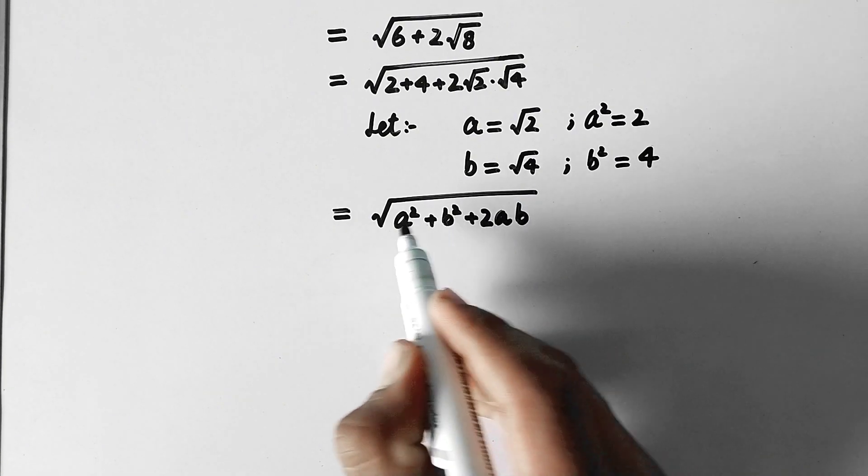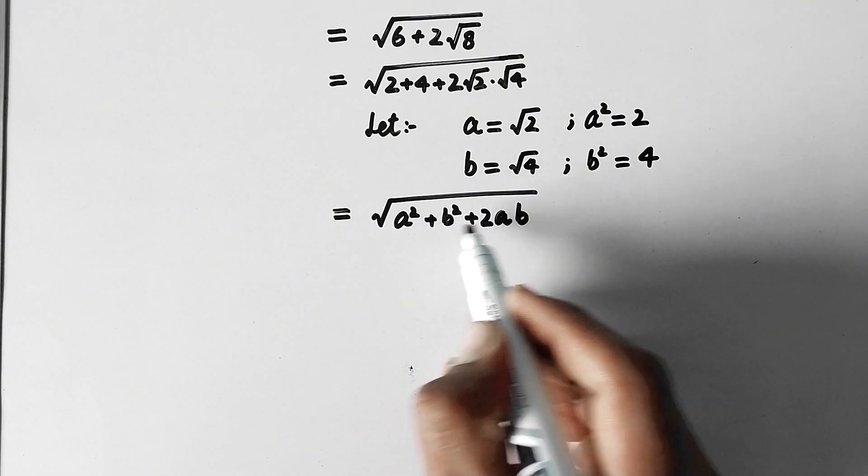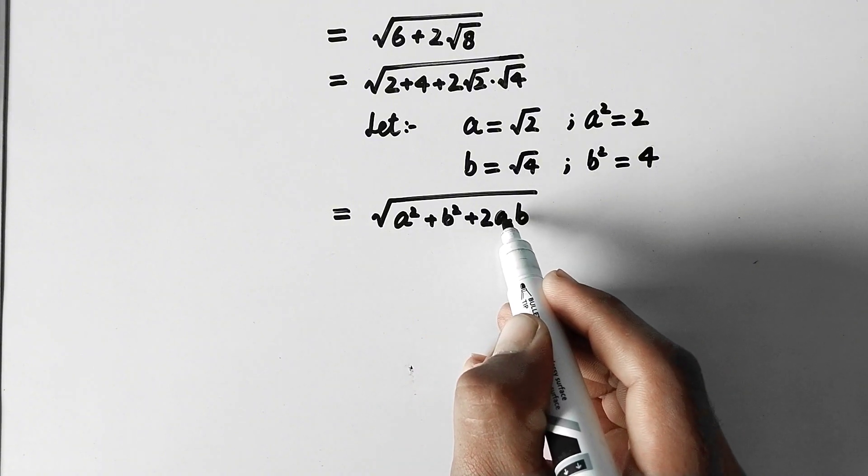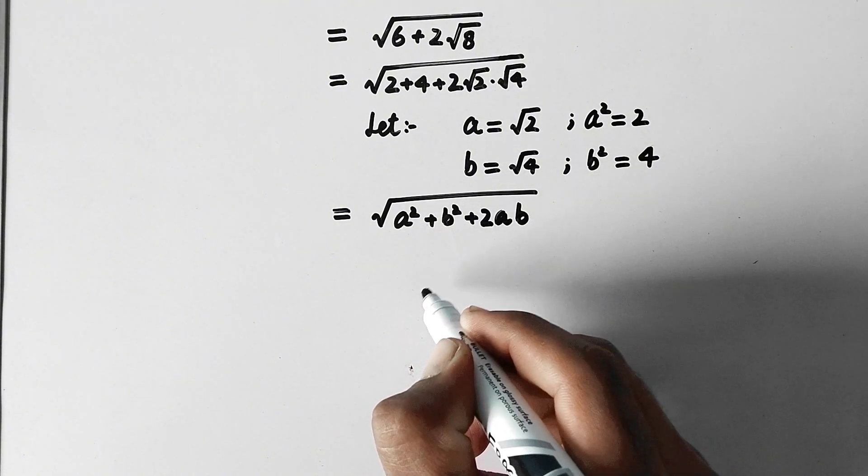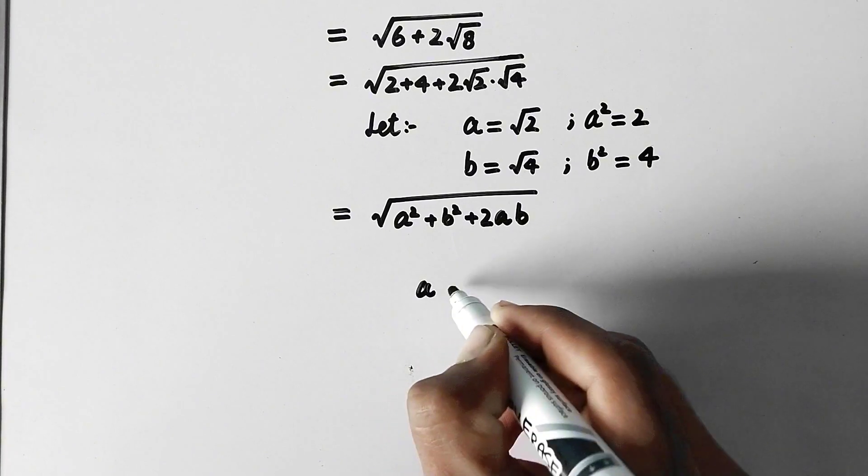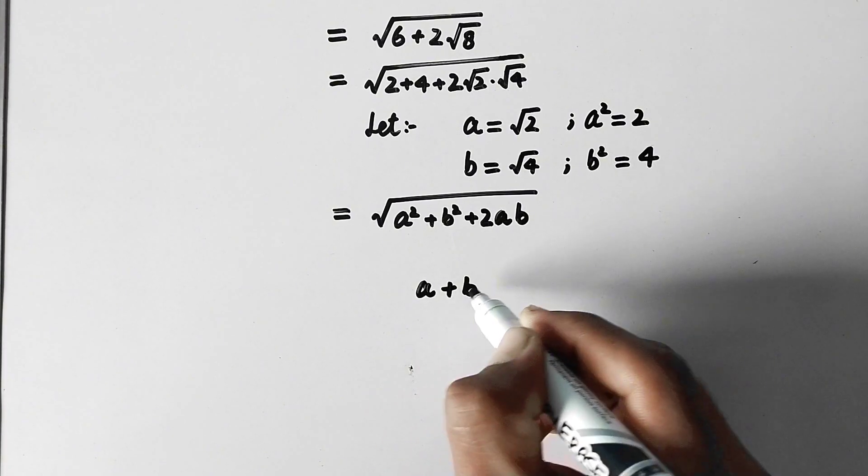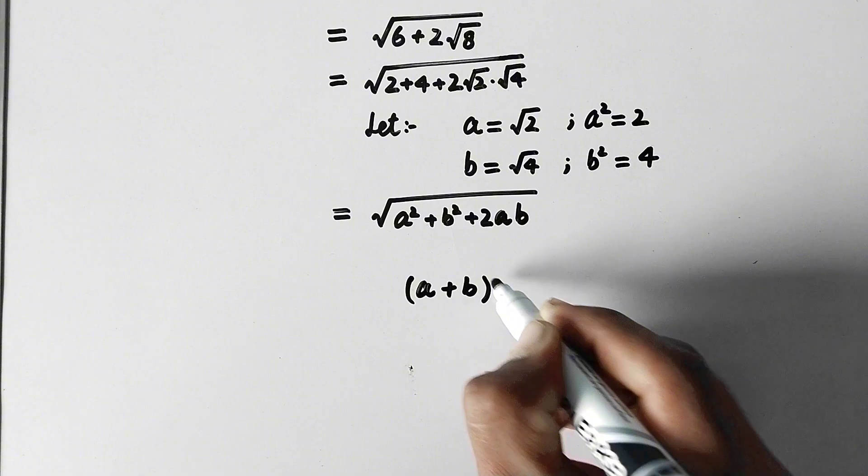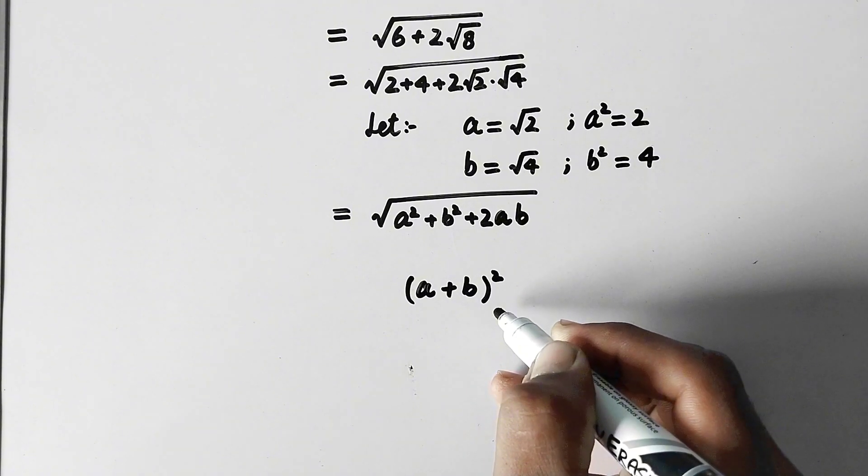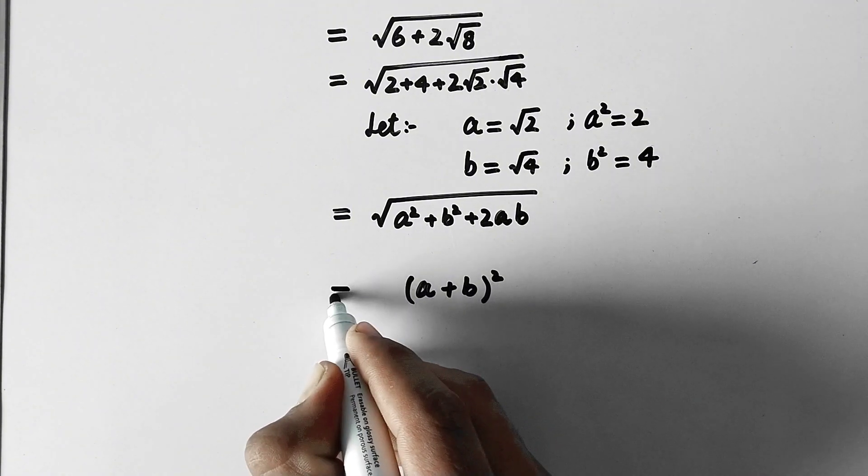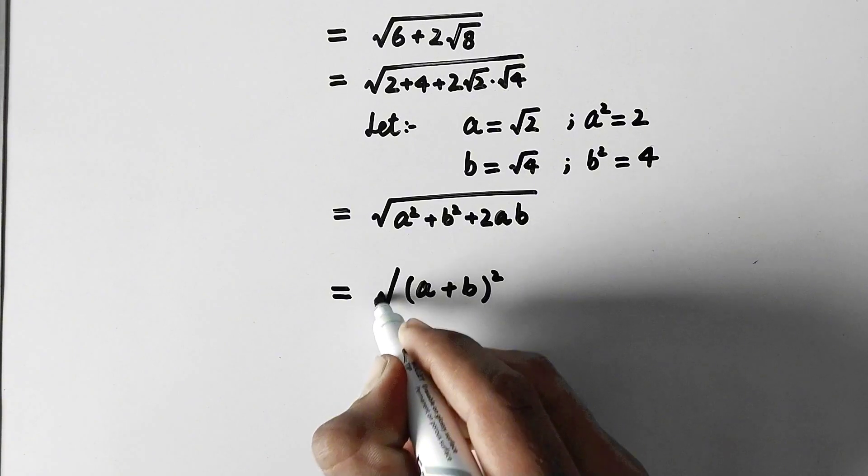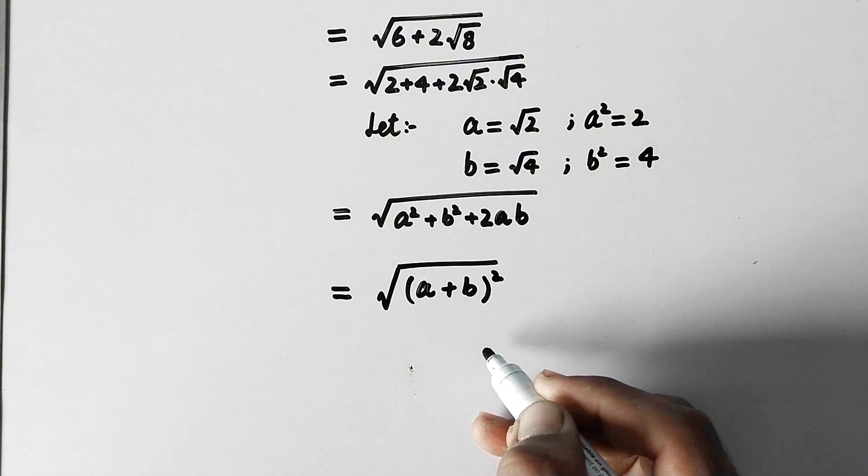So here we can inspect that it is a form of an algebraic formula. Its closed form will be equal to √(a + b)².